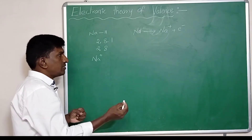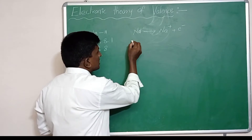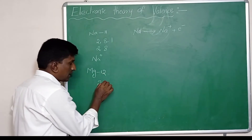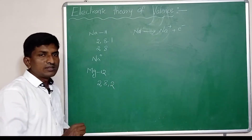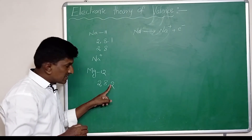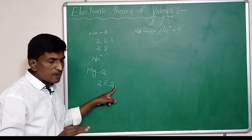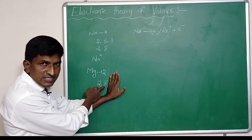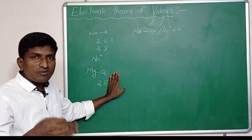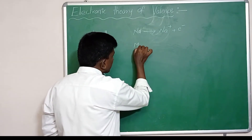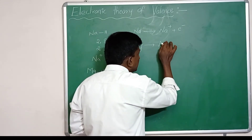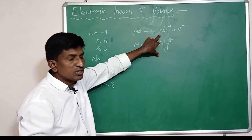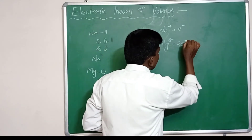Similarly, for second group elements, take magnesium with atomic number 12. It has 2 electrons in the first orbit, 8 electrons in the second orbit, and 2 electrons in the third orbit. Gaining 6 electrons to reach 8 in the outermost orbit is very difficult, so magnesium loses 2 electrons instead. Then it gets 8 electrons in the second orbit, becomes stable, and converts into a di-positive ion, Mg²⁺, which is a cation.